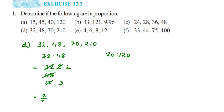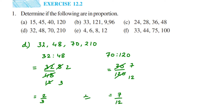For the second ratio, 70 by 120: cancel in the ten table — ten sevens are 70, ten twelves are 120 — so we get 7 by 12. Comparing: 7 by 12 is not the same as 2 by 3. They are not equal, which means they are not in proportion. Answer is No.